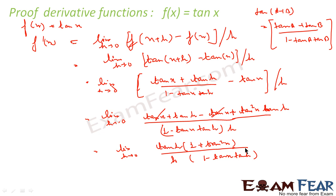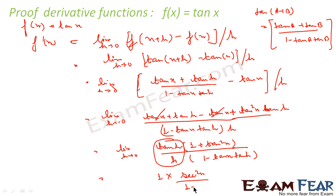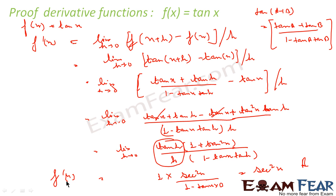Now applying the limit as h→0: tan h/h → 1, (1 + tan²x) stays as is which equals sec²x, and (1 - tan x·tan 0) = 1 - 0 = 1. So the whole thing becomes sec²x divided by 1, which is sec²x. Therefore f'(x) = sec²x.